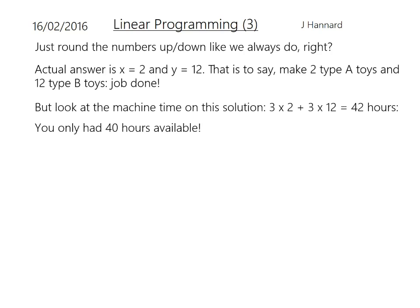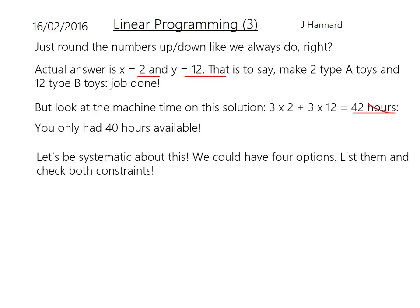Look at the machine time on the solution. It was 3x + 3y must be less than 40, but if you put in x = 2 and y = 12, that actually doesn't fit the constraint — you'd end up working 42 hours and have workers protesting they've been overworked. So let's be systematic about this. We could have four options — list them and check all of your constraints. It's not necessarily just two; there could be three or four that you have to keep happy. The numbers around the optimum point were approximately x = 1.66 and y = 11.66, so we round up and down on both sides and see what we get each time.